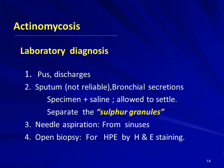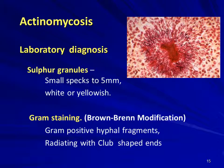If pus is available from the lesions it is the best specimen; bronchial secretions or needle aspirations from sinuses are also useful. The sulfur granules are a pathognomonic feature of this infection. They are not related to actual sulfur but appear light yellow in color — small specks up to 5 millimeters in size, white or yellowish in color.